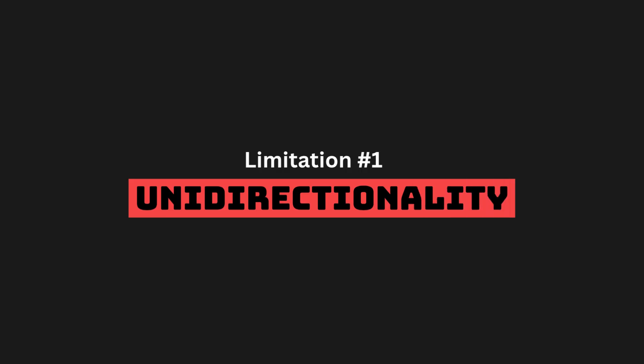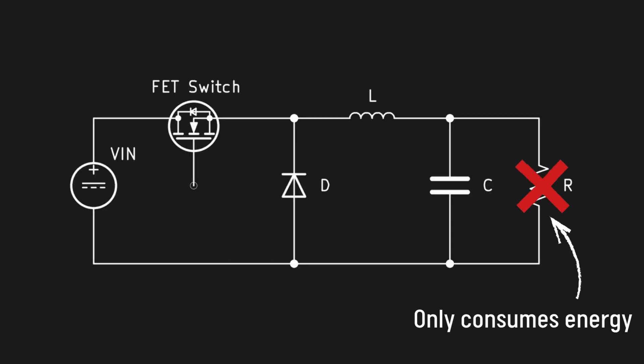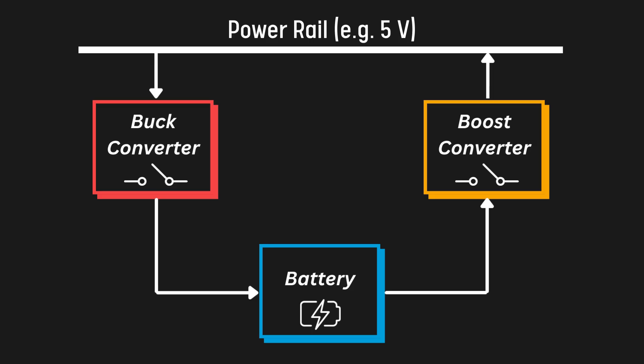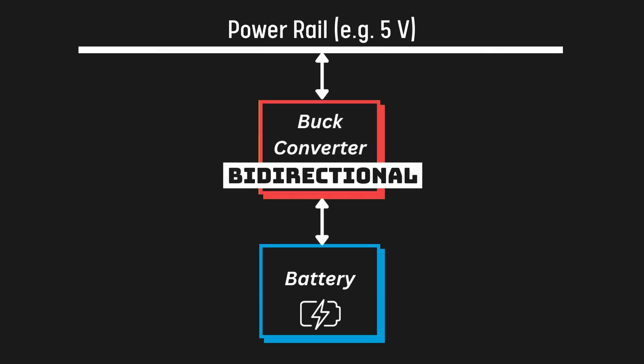One of the biggest limitations of traditional buck converters is unidirectionality. In many applications, the load is not a resistor. It may store or generate energy, like a battery or a DC motor. Instead of using a separate converter to recover the load's energy, you can use a bidirectional buck converter, which can transfer power in both directions.